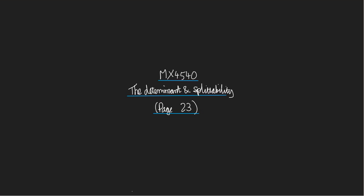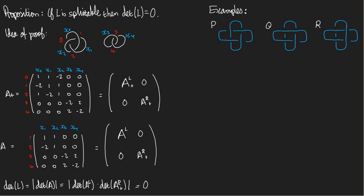It's based on page 23. Here's the result in question. Proposition: If a link L is splittable, then its determinant is zero.